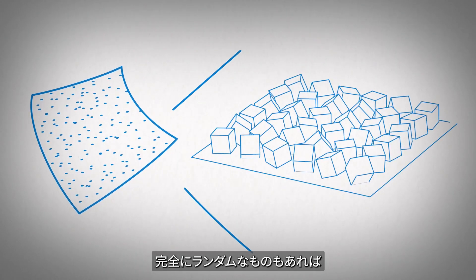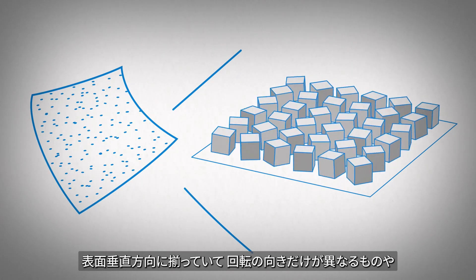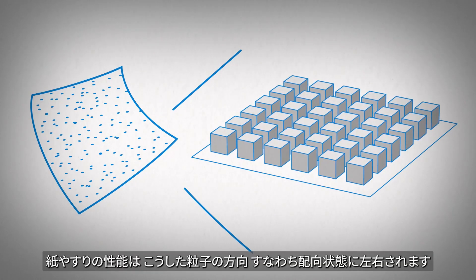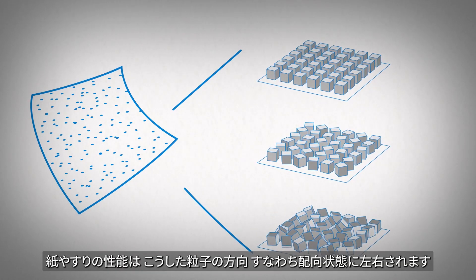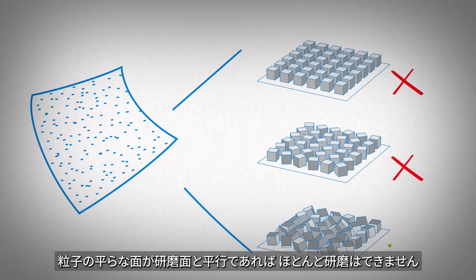They could be randomly oriented, lying flat on the paper but random in rotation, or perfectly in alignment. The performance of sandpaper is dependent on this. If the flat sides are parallel to the surface, very little sanding can be accomplished.